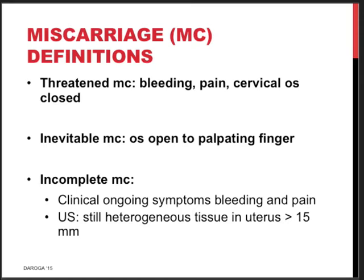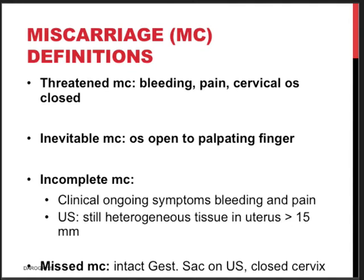Incomplete miscarriage means the woman has ongoing symptoms of bleeding, loss of clots or tissue, and pain, and the ultrasound scan still shows a heterogeneous mass in the uterus, usually more than 50 millimeters — though there is no obvious black-and-white cutoff. A missed miscarriage means the woman may have pain and bleeding or no symptoms whatsoever, and on ultrasound we can visualize an intact gestational sac with a closed cervix — the miscarriage still needs to take place.